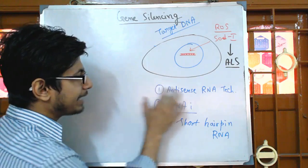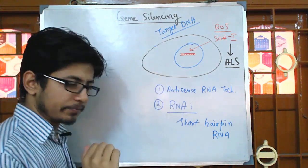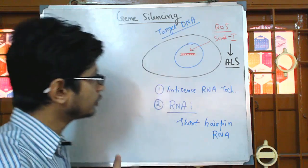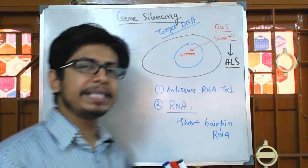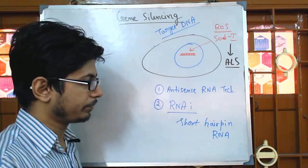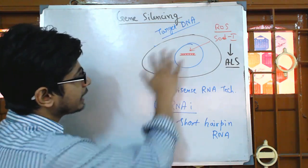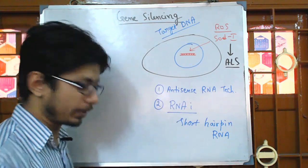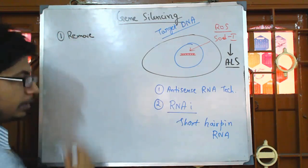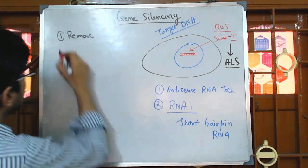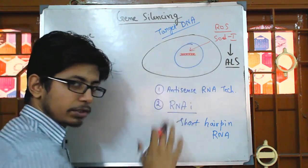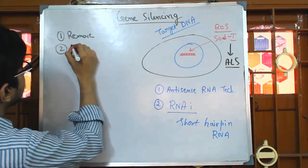Now we are going to talk about the antisense RNA technology. Gene silencing can be done in three different ways. Gene silencing means we do not want any expression of that gene — no copies of protein made from the signaling of that gene. The first way is that we can completely remove that gene by the gene knockout process.